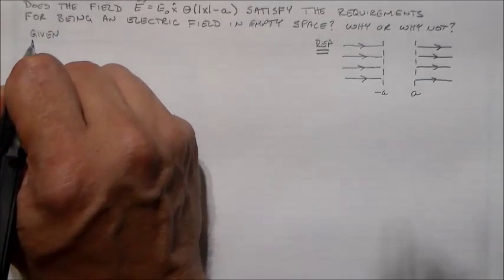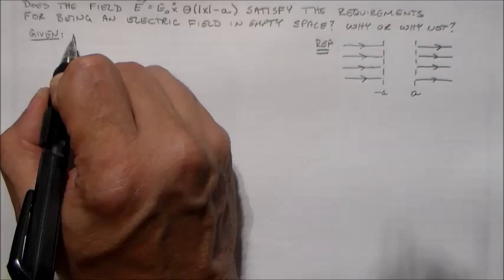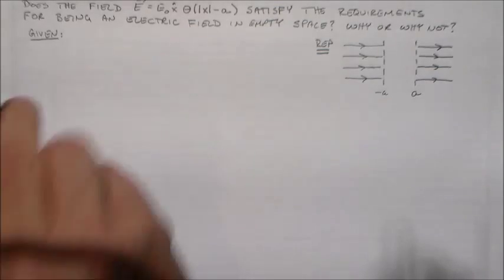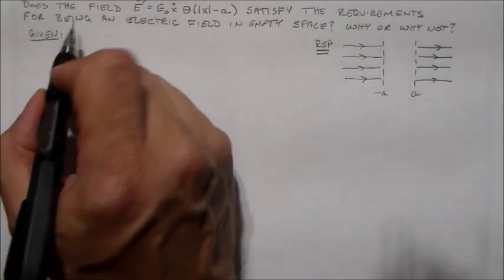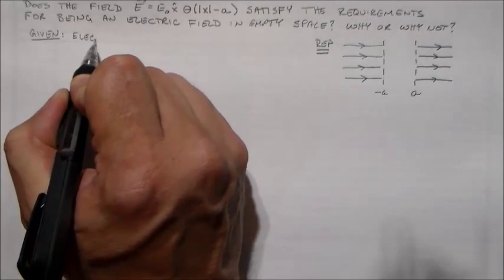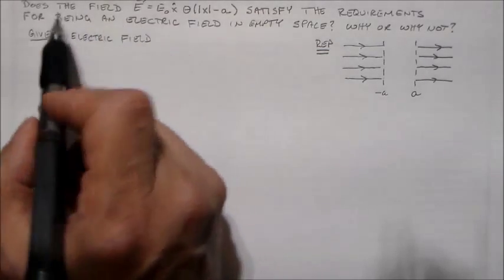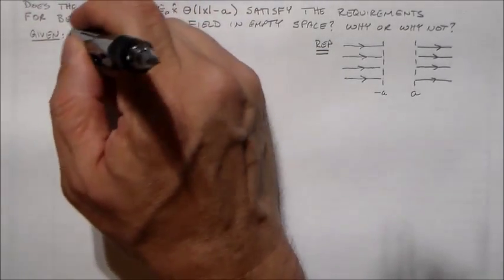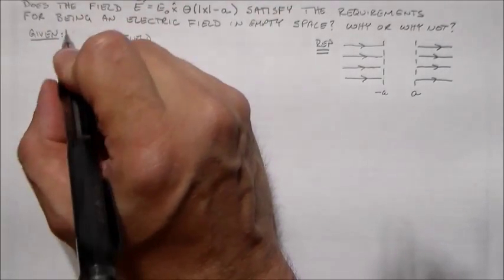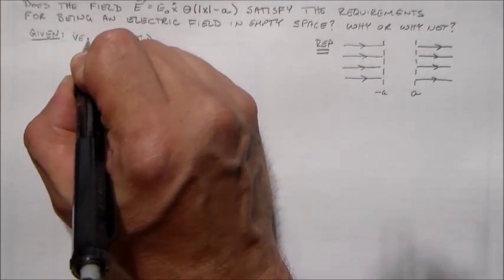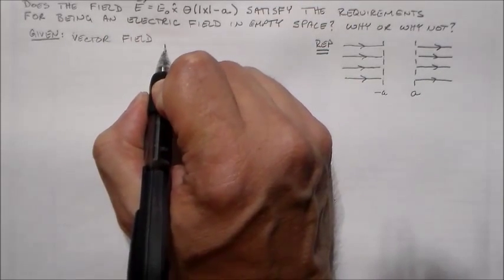I always do these in the way that we write them out. So I want you to see how everything works as far as the homework is concerned. So given, what am I given? I'm given the electric field. Or actually, it's just a vector field right now. We'll find out if it's a good electric field.